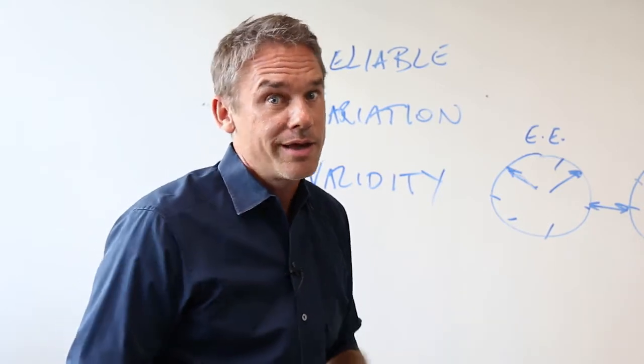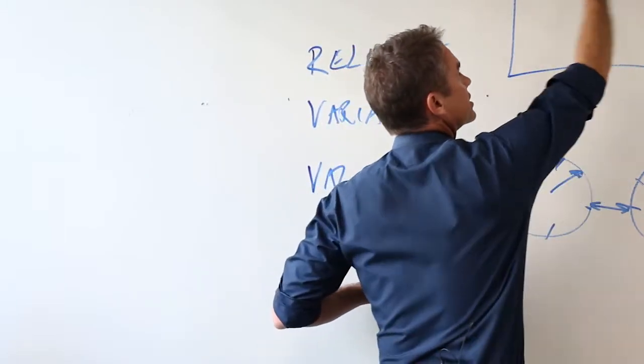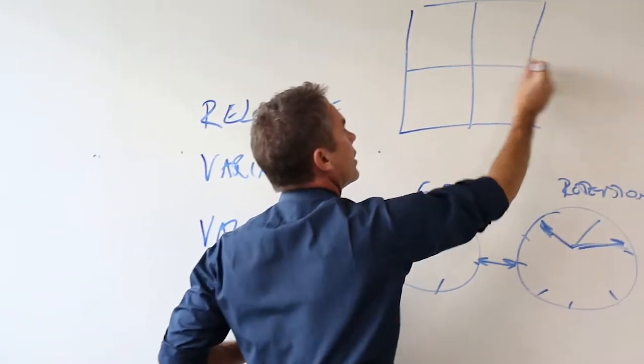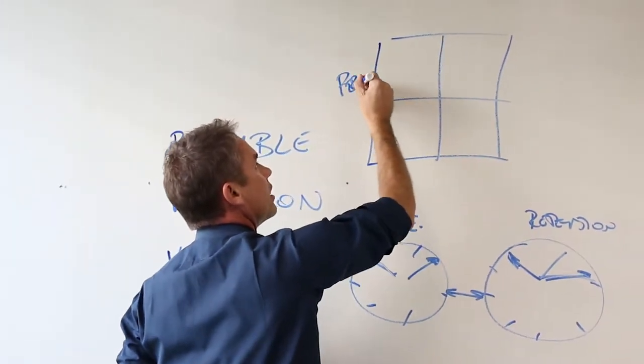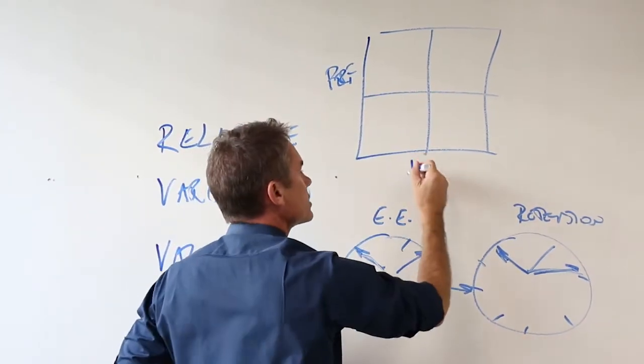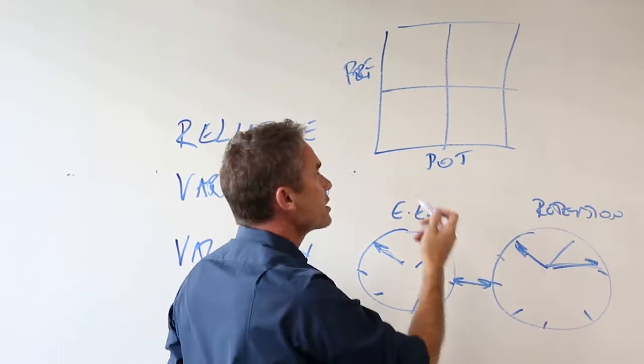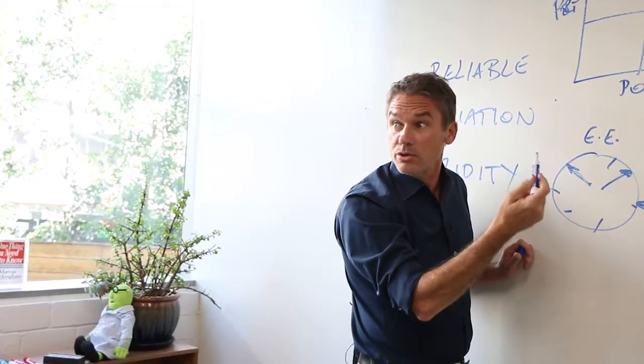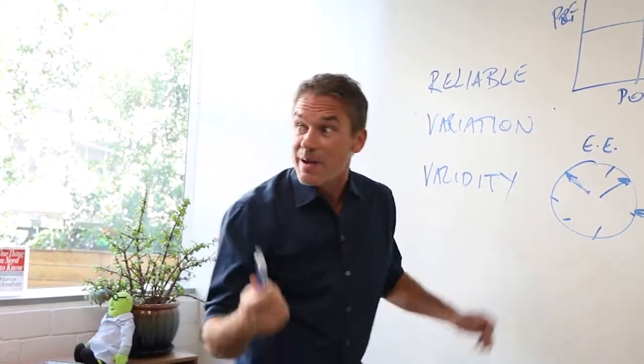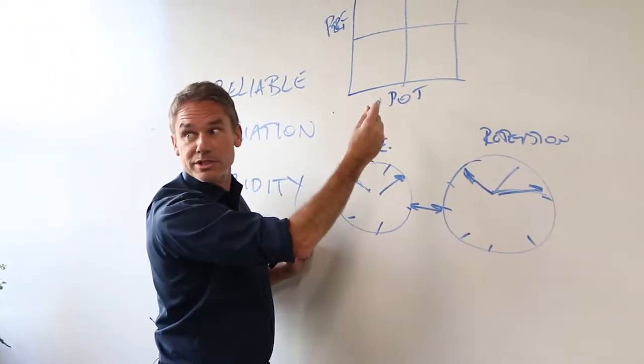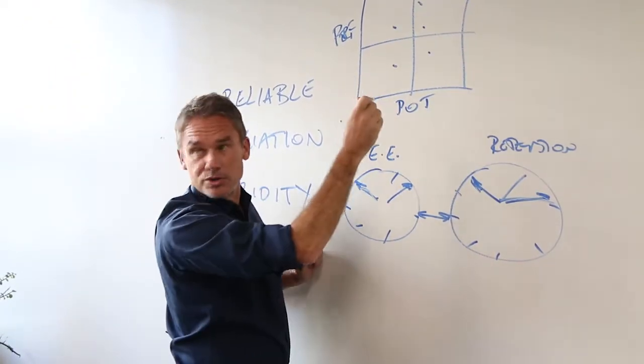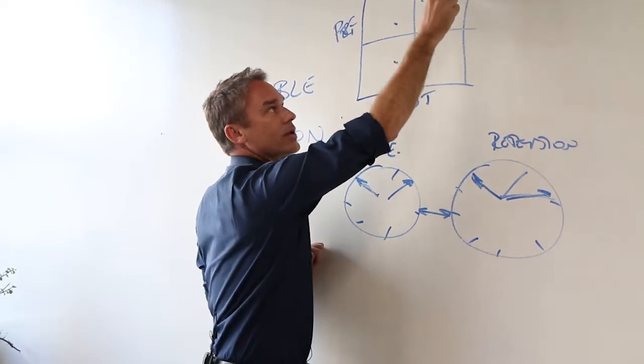What does that mean? That means all these nine box grids that some of you are familiar with where you've got performance up the y-axis and potential on the x-axis. And we sit around in these talent review meetings and people rate you, maybe you didn't even know this, but people rate you on performance and potential and they put you and other people on your team somewhere on this grid.